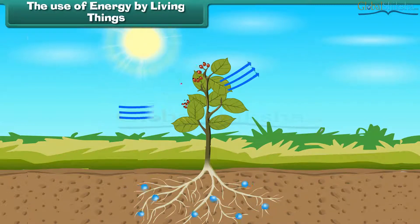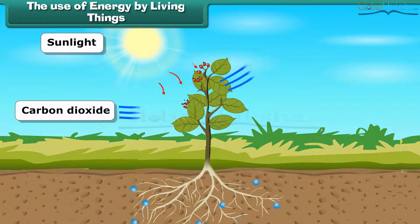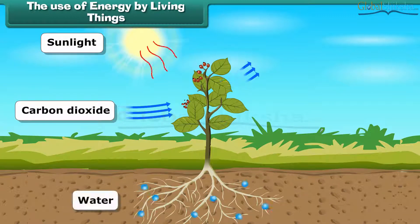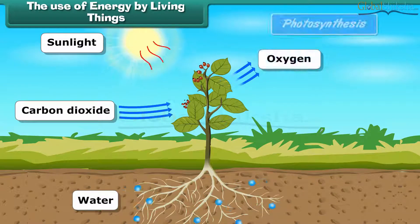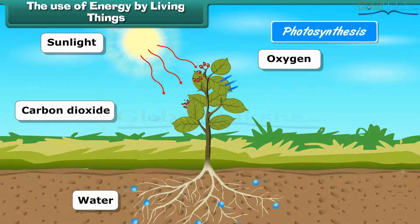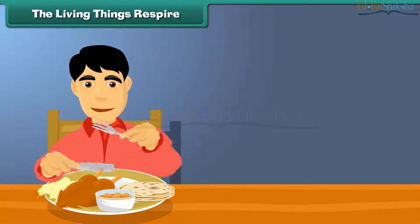Food is prepared by plants through the process of photosynthesis. Plants require sunlight, carbon dioxide, water, and chlorophyll for the process of photosynthesis.